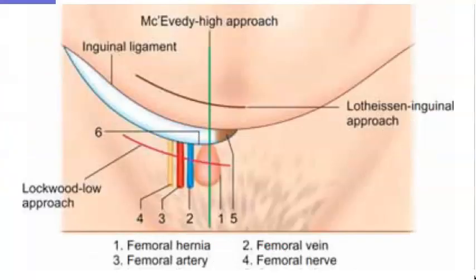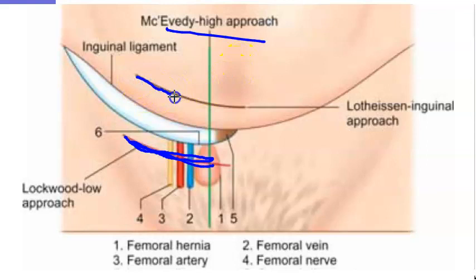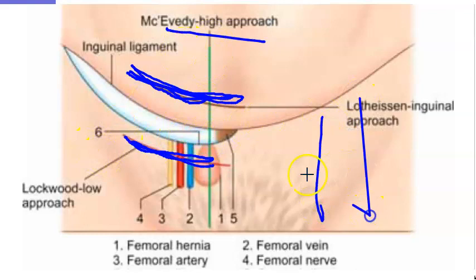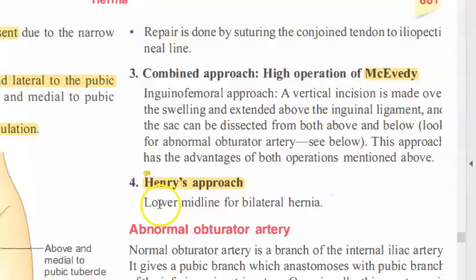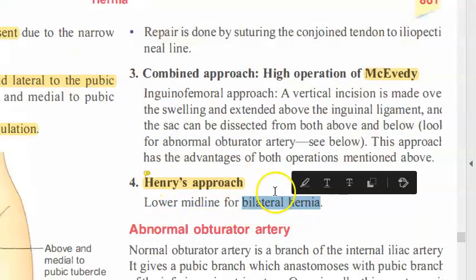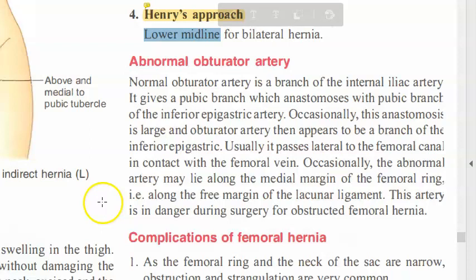Henry's approach uses a lower midline incision for bilateral hernia. Looking at the diagram: the low approach is Lockwood's, the inguinal approach is Lothissen's, and the high approach is McEvedy's. Henry's approach is the lower midline approach, used for bilateral hernias.